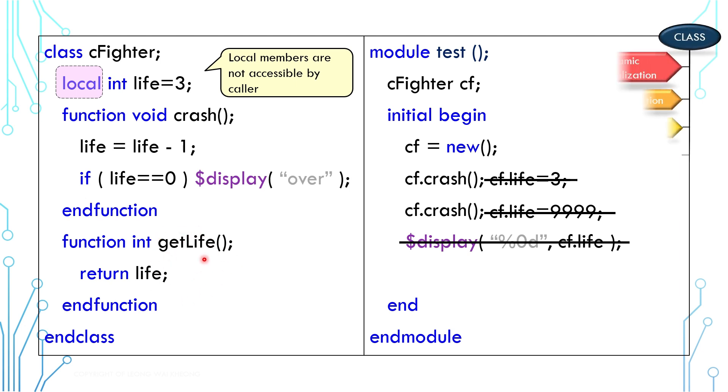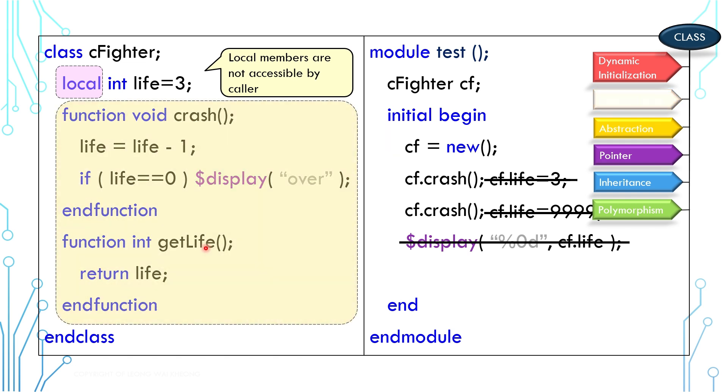This is the concept of encapsulation, where in the class, there will be member variables or functions which we don't want to expose to users. Variables and functions which are not marked by local are generally public and can be accessed by users.